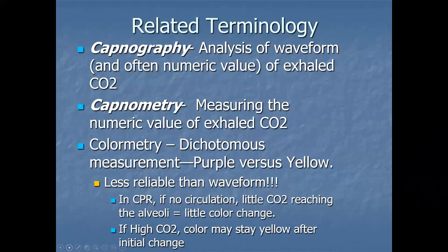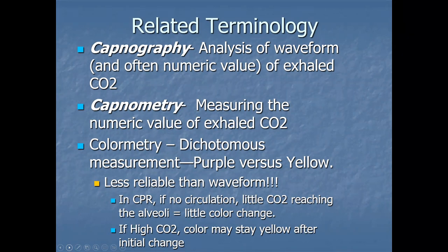Related terminology: capnography is the graphic depiction of CO2 over time. Capnometry is the numerical value. Many monitors provide both the waveform and the number. Colorimetry — found in some intubation boxes — provides a color change indicating CO2 presence, but doesn't give the number or graphical depiction. Good color change strongly suggests — but doesn't confirm — correct ET tube placement. It's less reliable than waveform capnography. During CPR with no circulation, little CO2 reaches the alveoli, so there may be little color change.